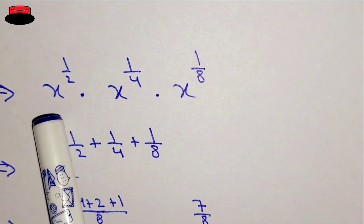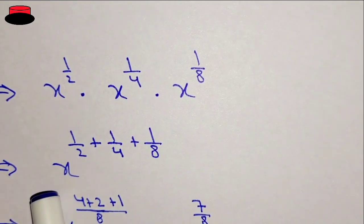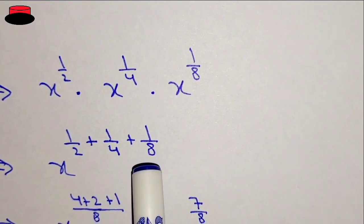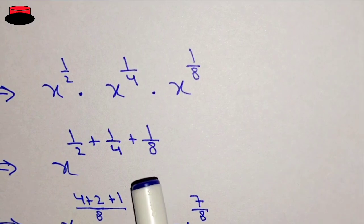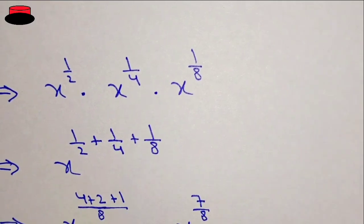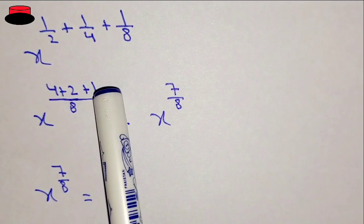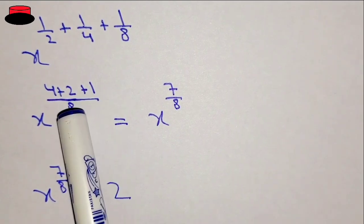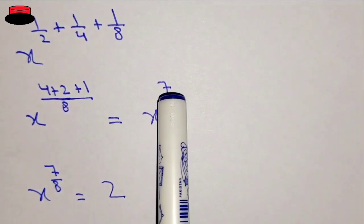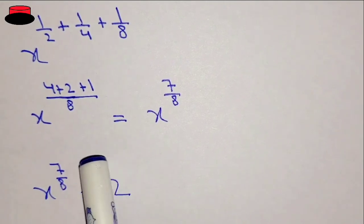Since we know that when the bases are the same, the powers are added — so x power one upon two plus one upon four plus one upon eight. We will solve it and find the LCM, so it will be x power four plus two plus one divided by eight, giving x power seven over eight equal to 2.